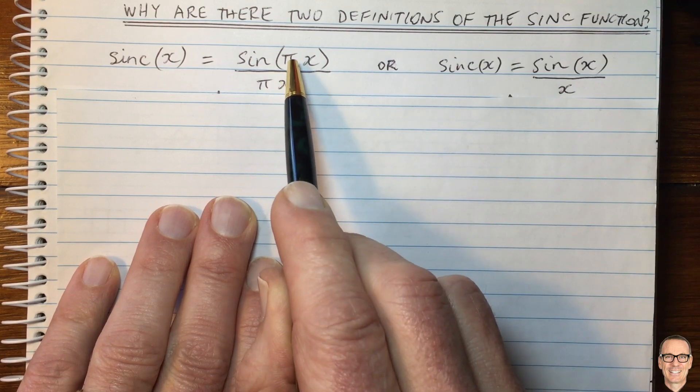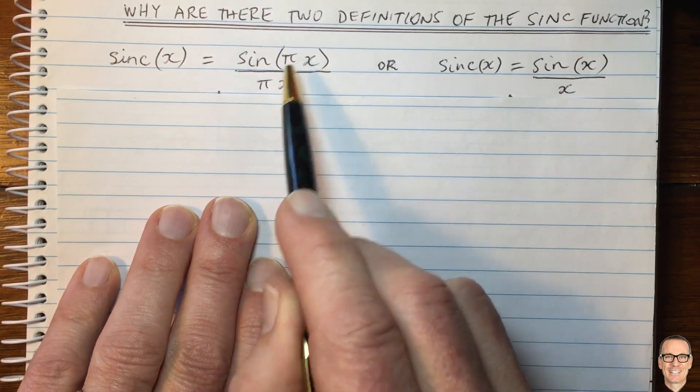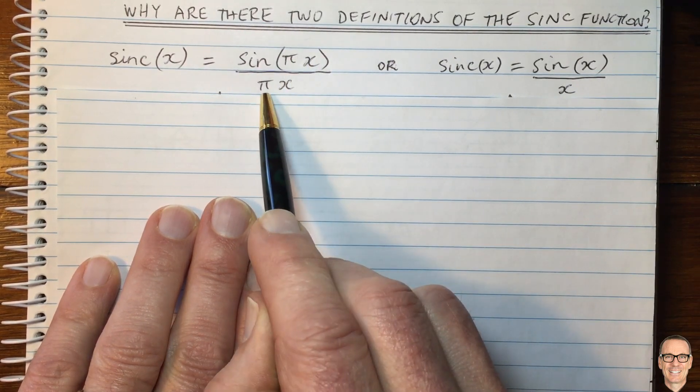You can see the only difference is that on the one on the left, there's a pi in the numerator and the denominator.